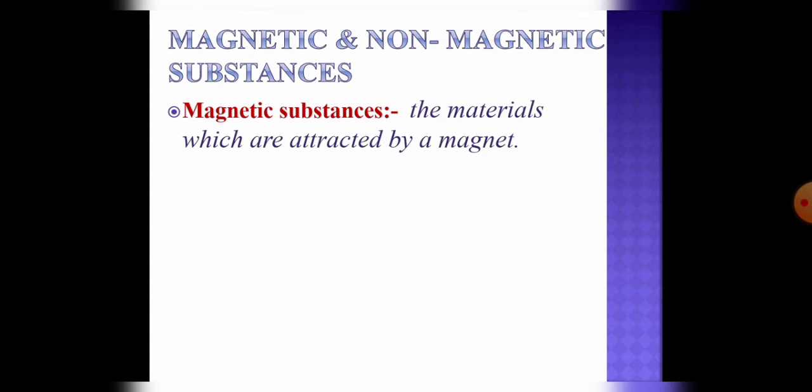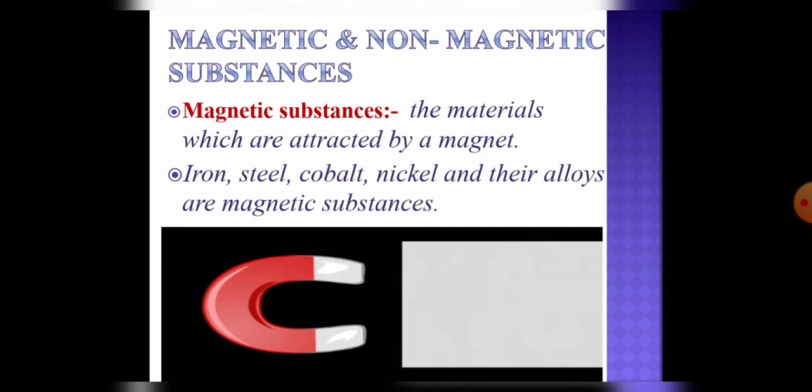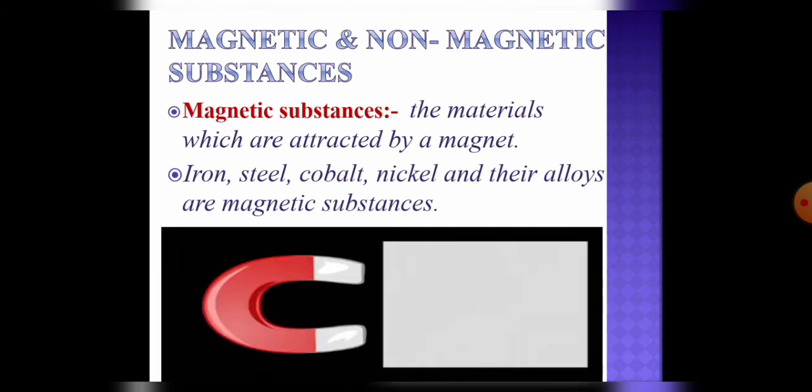Here you can see the examples like iron, steel, cobalt, nickel and their alloys. These are best examples of magnetic substances.